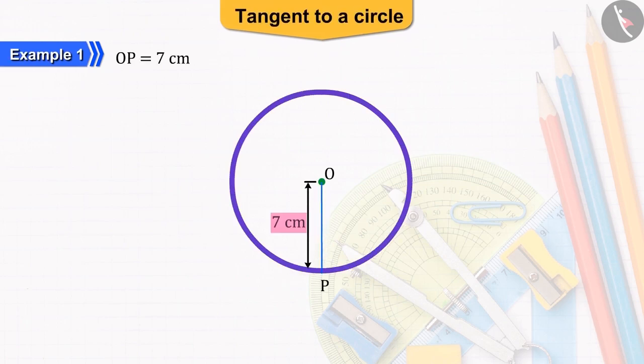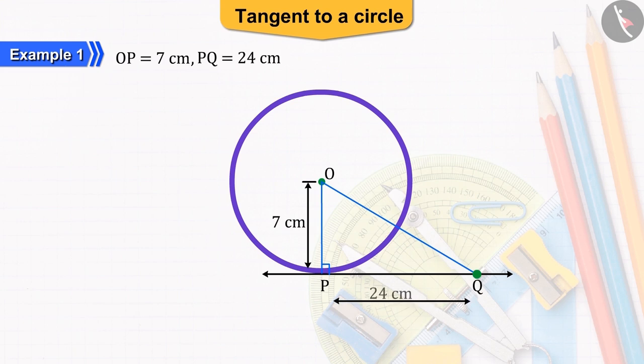The radius of a given circle is 7 cm. Point P is located on the circumference of the circle, where the tangent to the circle is drawn. If a line is drawn from the center O of the circle, it intersects the tangent line at point Q in this way. If PQ is equal to 24 cm, what will be the length of OQ?